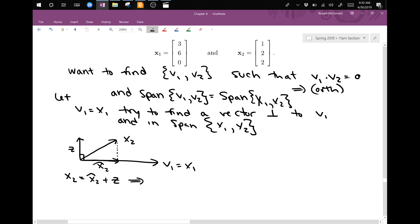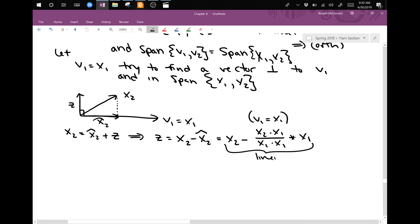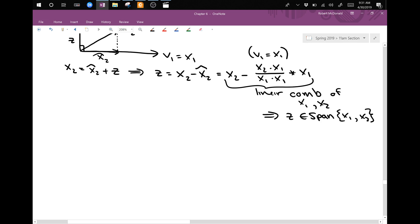In fact, this implies that z is equal to x2 minus x2 hat, which by the formula in a previous class, this is x2 minus (x2 dot x1)/(x1 dot x1) times x1, because remember v1 is equal to x1. And this is a linear combination of x1 and x2. And so that implies that z is in the span of x1, x2. And so the whole point of this is now z is a perpendicular vector, and it still lives in the span of x1, x2.